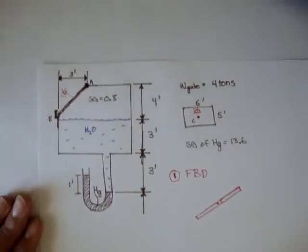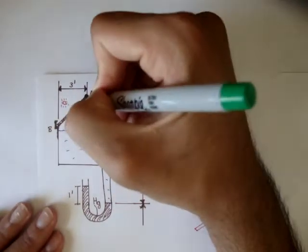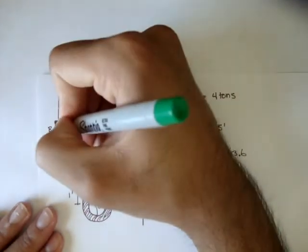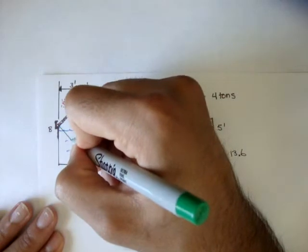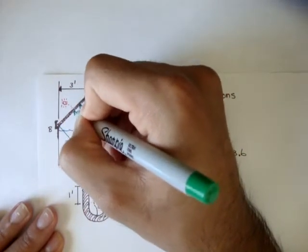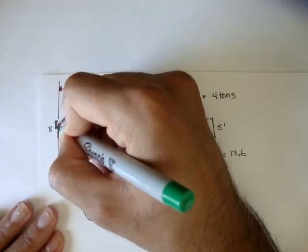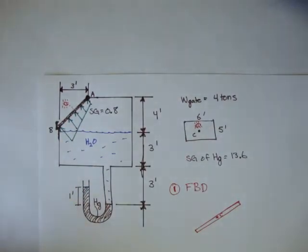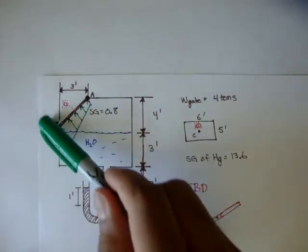Now, the pressure distribution acting on this gate looks something like... Let's see if I can draw this right. It's looking something like that. So, obviously, the farther you go down, the pressure increases.